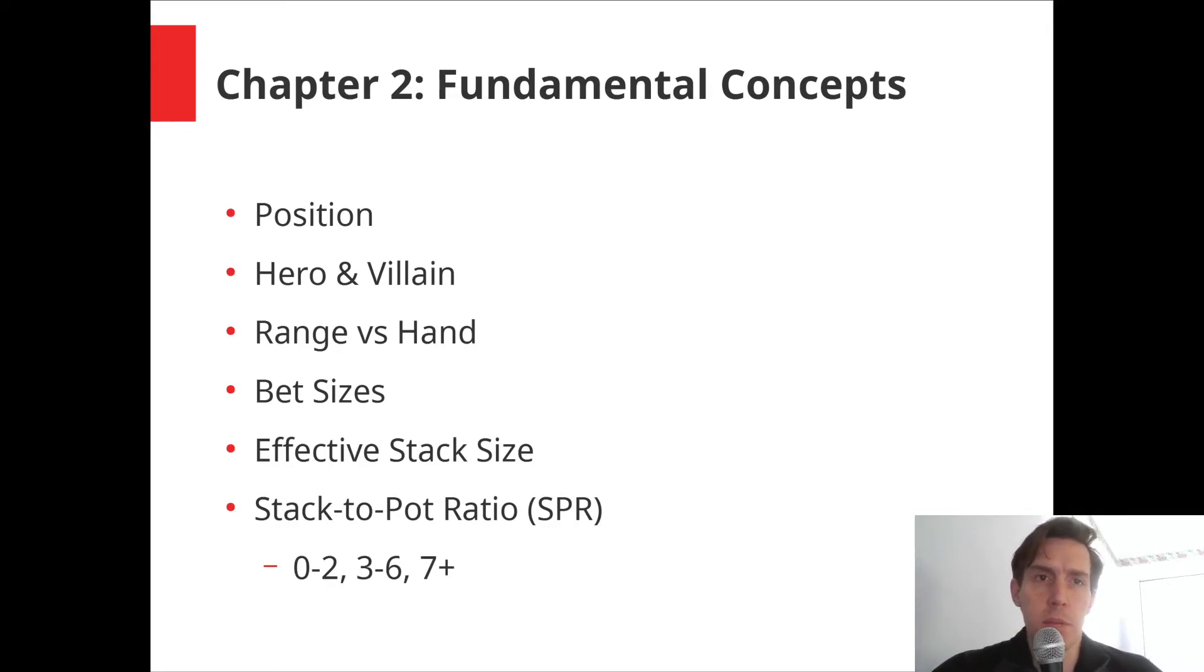So we have in a six max game, you have the small blind, big blind, under the gun, your middle position, your cutoff and your button. So position is both absolute and relative, where everything that I just mentioned, those are the absolute positions, small blind to button.